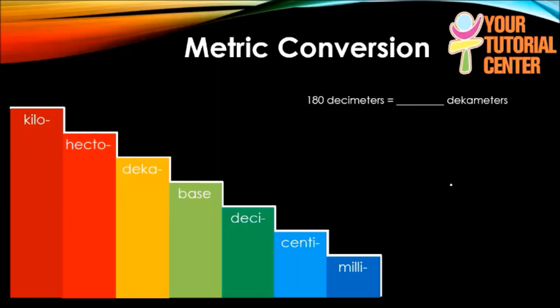We have 180 decimeters. We start with deci, and to get to deca we just need to move two places to the left. So one, two, our new decimal point should be located here. So 180 decimeters is equal to 1.8 decameters.